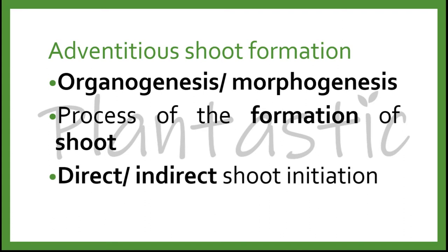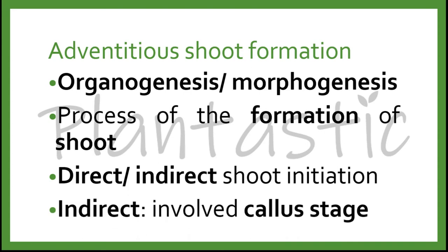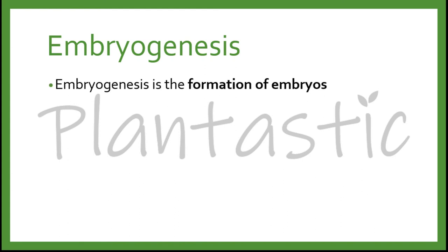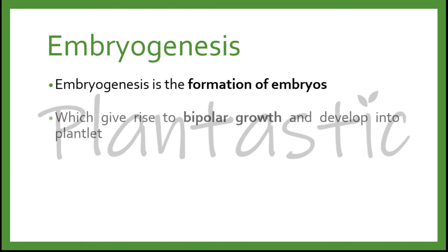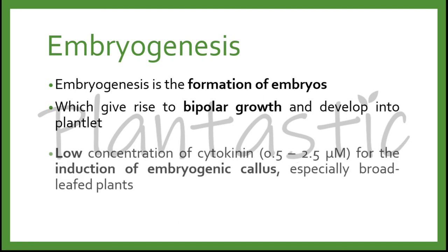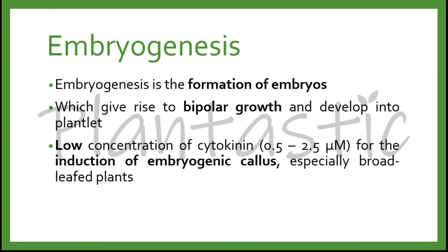Direct shoot formation is the formation of shoot directly, while indirect shoot formation means that the shoot was formed on the callus. It is also involved in embryogenesis, which is the formation of embryos that gives rise to bipolar growth and develops into plantlets. Low concentration of cytokinin, around 0.5 to 2.5 micromolar, was found to be very effective in the induction of embryogenesis, especially in broadleaf plants.